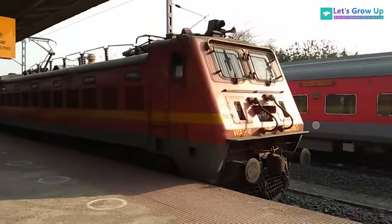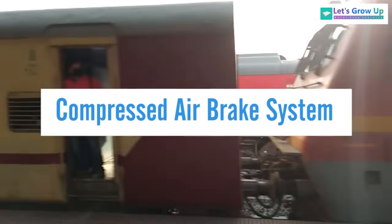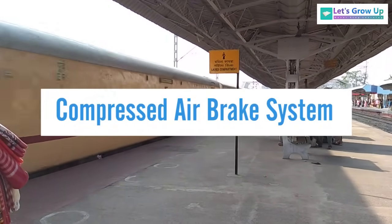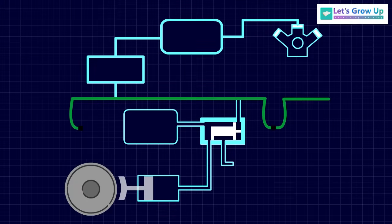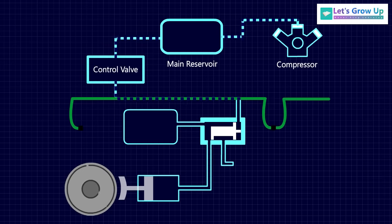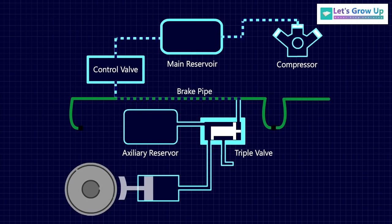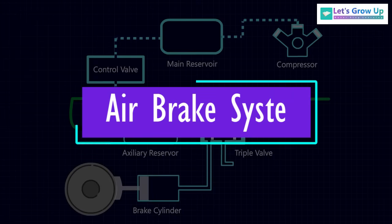The railway braking system is known as the compressed air brake system. It is a system where air is drawn into a compressor and stored in the main reservoir. Compressed air from the main reservoir is distributed along the train through the main reservoir pipe. On each vehicle, the pipe is connected through a triple valve to an auxiliary reservoir, which stores air for use on that vehicle's brake system. In this video, we will learn the concept of the air brake system.